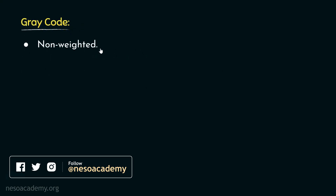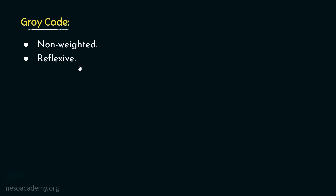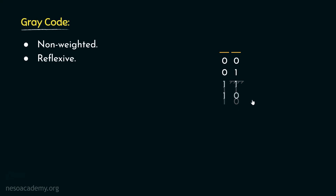Gray codes are non-weighted and also reflexive. To illustrate the reflexive property with one bit, the possible sequences in binary are 0 and 1. When finding possible sequences with two bit places in gray, we mirror the bits — apart from the MSB, the remaining bits (the LSB) are mirrored. The upper portion is accompanied by zeros and the lower mirrored portion by ones.